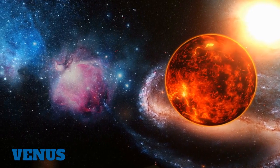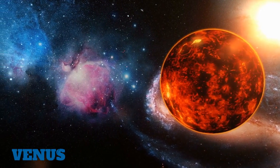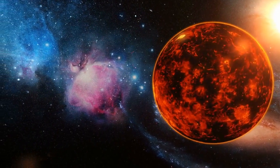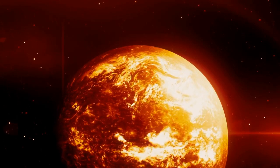The second planet from the Sun, Venus, is the hottest planet in our solar system. It has a surface hot enough to melt lead.